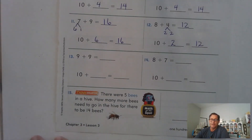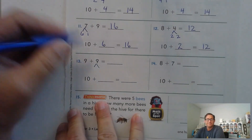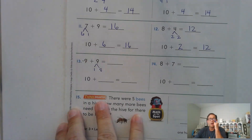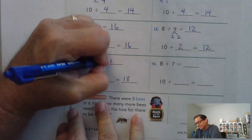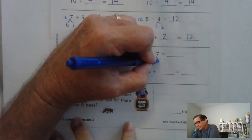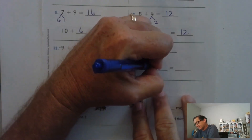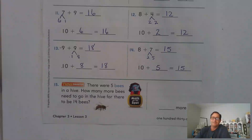Nine plus nine — that's a double, and we know that's 18, but we are practicing making a 10. Take one of the nines — how much do we add to make a 10? One. So nine plus one is 10, and 10 plus eight is 18. Eight plus seven equals what? Break the seven into two plus five, because eight plus two is 10. 10 plus five is 15. So eight plus seven is 15.